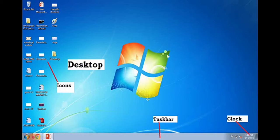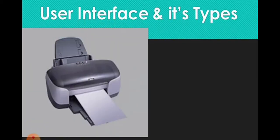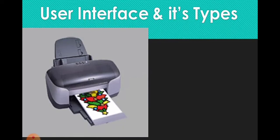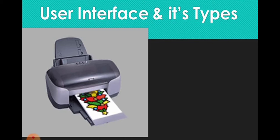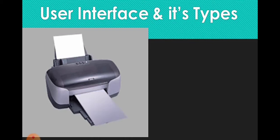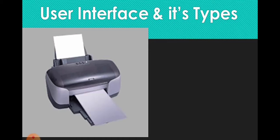Windows 7 is better than other versions of Windows in terms of functionality. It is more user-friendly. The operating system acts as a link between the hardware and the user interface and system.